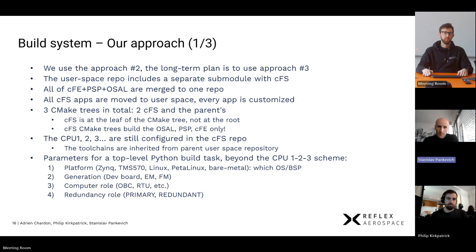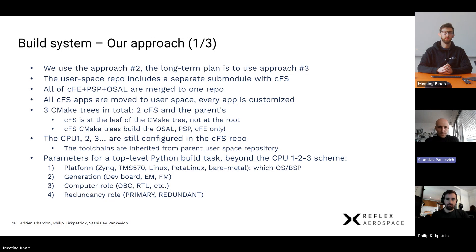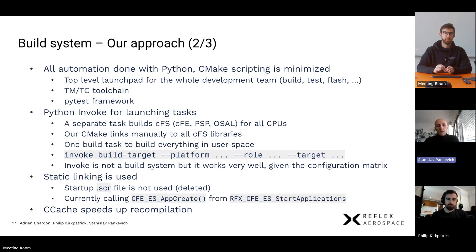We chose approach two, with a long-term plan to migrate to approach three. Our user-space repository includes CFS as a submodule; we merged CFE, PSP, and OSAL into one repository; and all CFS apps were moved to user space because literally every app had to be customized. We now have three CMake trees — two for CFS and one for the parent user-space repository. We maintain the CPU1/2/3 configuration in CFS, but all toolchains and configurations are provided from the parent user-space repository. Our parameters are more sophisticated, customized by work generation (development boards, engineering models, flight models), computer roles within our avionics architecture, and redundancy roles (primary or backup).